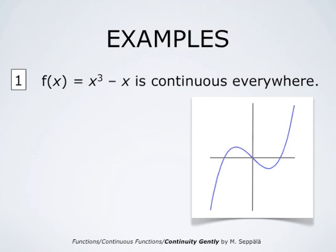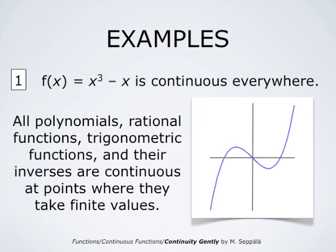It is important to know what kind of functions are continuous. Here is an example of a continuous function: x cubed minus x. Its graph is the blue curve shown in this picture. More generally, all polynomials, rational functions, trigonometric functions, and their inverses are continuous at points where they take finite values.